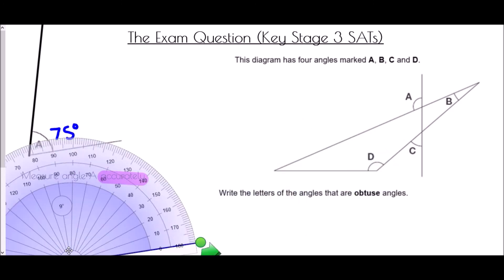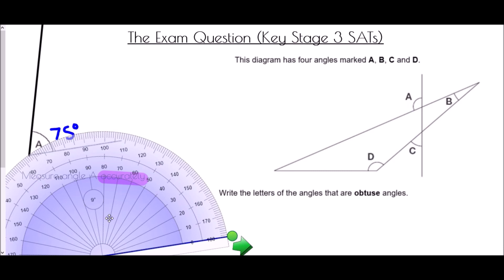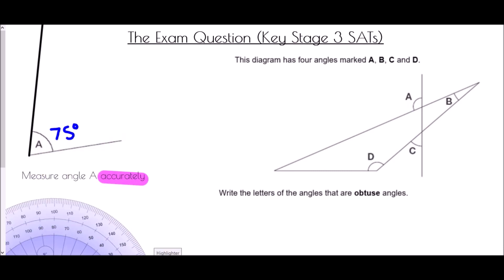The second question says the diagram has four angles marked A, B, C, and D — write the letters of the angles that are obtuse. You could measure each angle with a protractor, but this is more a case of being able to recognize them. Obtuse means larger than 90 degrees. Angle A — if it were 90 degrees it would stop earlier, but it goes further, so A is definitely obtuse. B is a very small angle, so that is acute. C has not reached 90 degrees, so that is also acute. D is quite a large angle, gone beyond 90 degrees, so D is another obtuse angle.